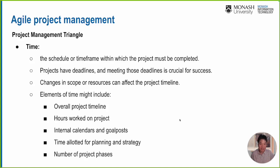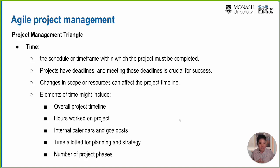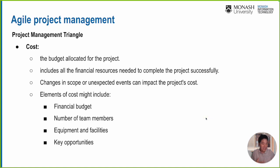What elements of time do we need to consider? We need to think about the overall project timeline and how many hours are needed for the project. For each feature, we need to estimate the effort. If we cannot accurately estimate how many hours are needed to implement a feature, it may be hard to manage the project. As part of assessment three, we will evaluate how you manage the project and whether you can deliver all features on time.